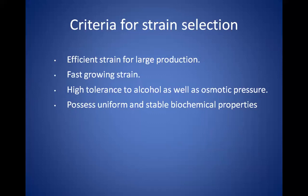When selecting a particular strain, it should have the following properties: it should be efficient for large-scale production, fast-growing, and have high tolerance to alcohol — since during production there will definitely be high concentrations of alcohol it must tolerate — as well as osmotic pressure. It should also possess uniform and stable biochemical properties.